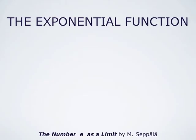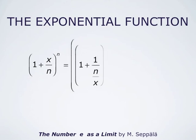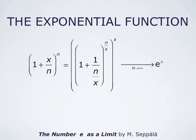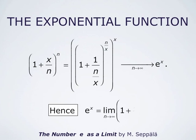The previous consideration can be generalized. Assume now that x is a positive number, and consider the quantity (1 plus x over n) raised to the power n. That can be written as (1 plus 1 over (n over x)) raised to the power (n over x), and that raised to the power x. As n approaches infinity, also n over x approaches infinity. We conclude that (1 plus 1 over (n over x)) raised to the power (n over x) approaches e, so the limit as n approaches infinity of (1 plus x over n) raised to the power n is indeed e to the power x.